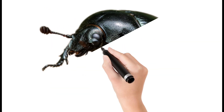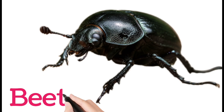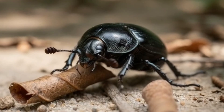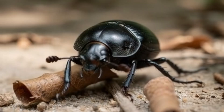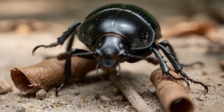Beetle. A beetle is an insect with hard outer wings. There are thousands of beetle species worldwide. Beetles live in soil, plants, and water.